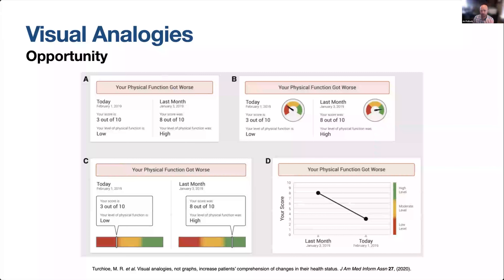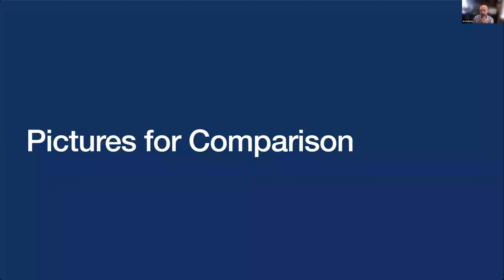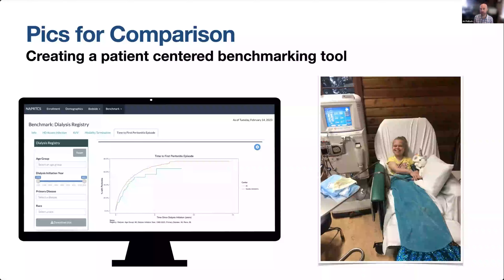This shows that there might be better opportunities for us to communicate this important information to our patients. So this background on visual analogies and the potential benefits of creating a benchmarking tool led us to the creation of a project we're calling Pictures for Comparison. The core question is: can we use visual analogies to communicate key health information to build patient-centered benchmarking tools that support patient-derived improvement opportunities?